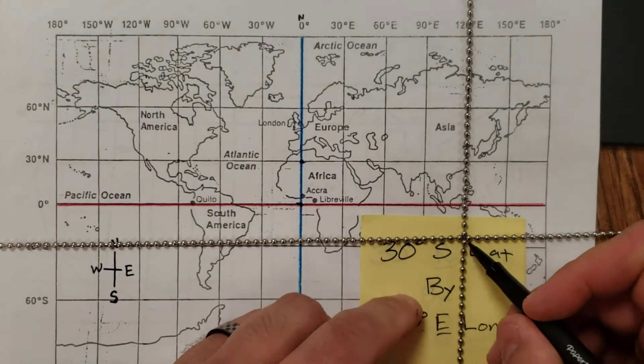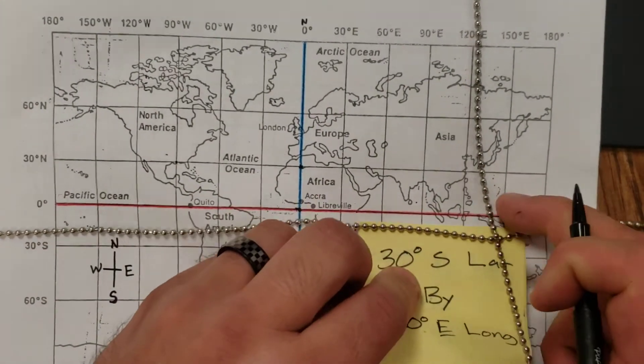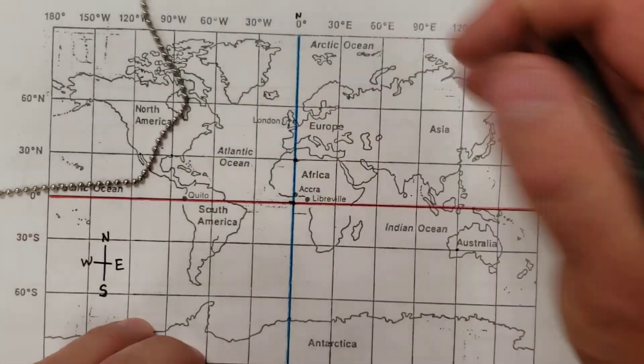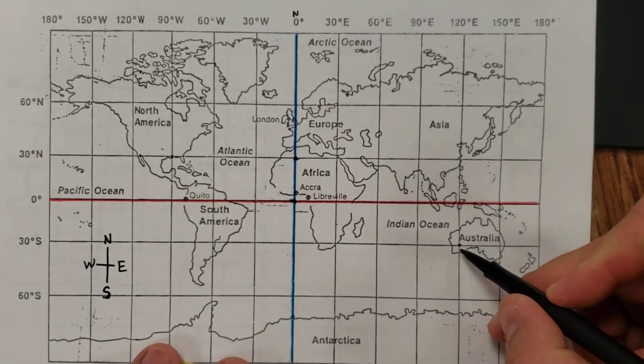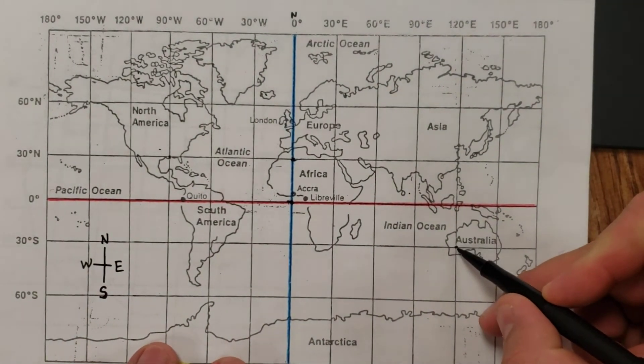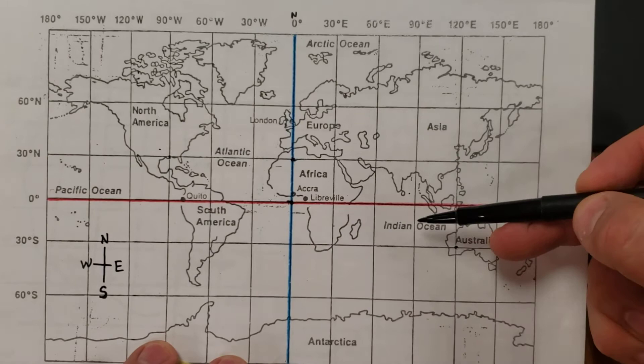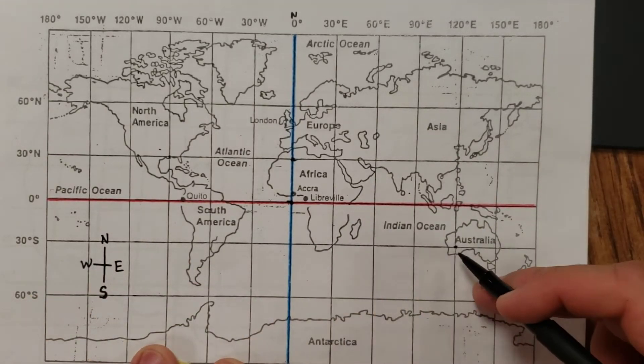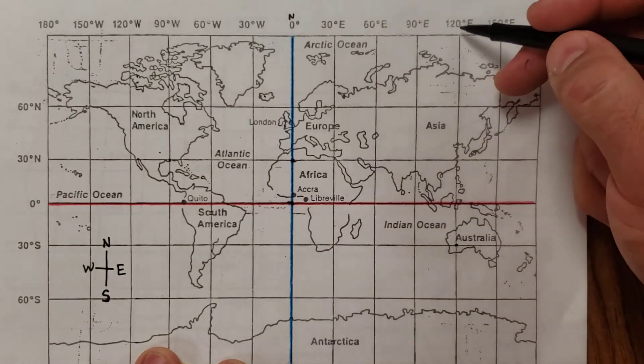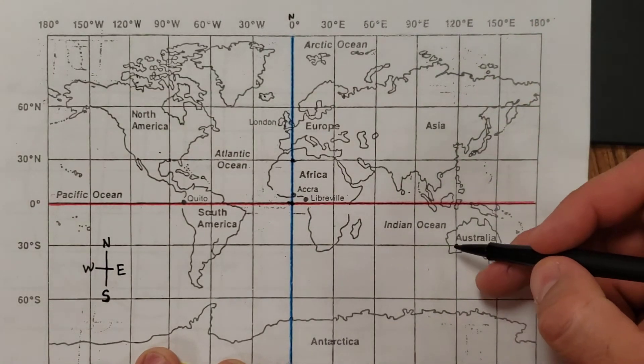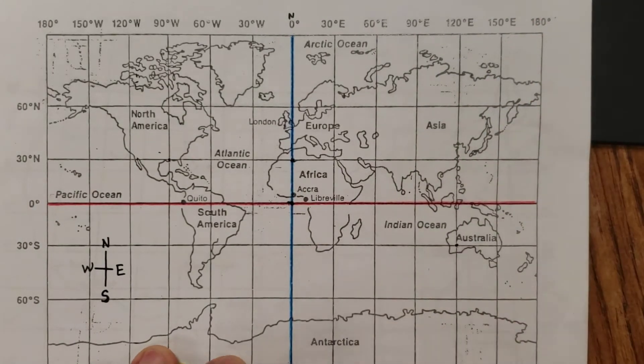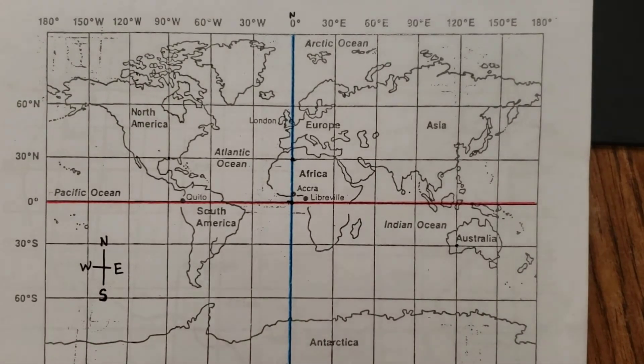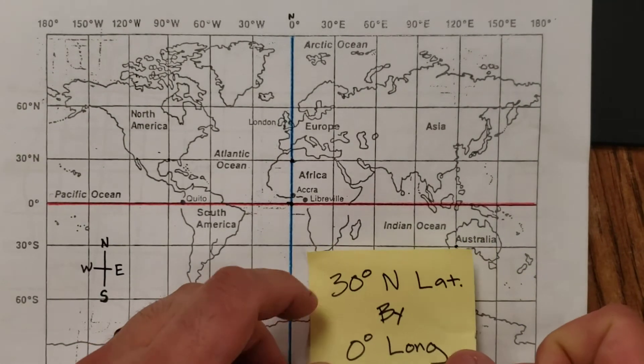I know all my sticky notes are under there, but right underneath there is the country of Australia. Right there is our dot for 30 degrees south. That's this line. And you're at an intersection of that line and 120 degrees east. So you just find the two lines on the globe and where they intersect is the coordinate you're looking for. Here's one more.